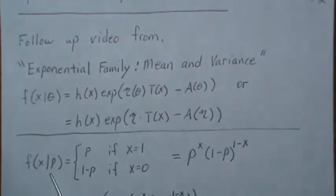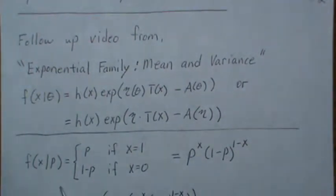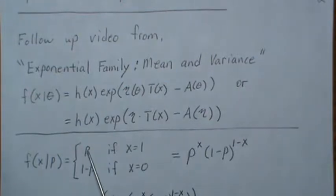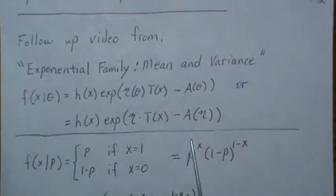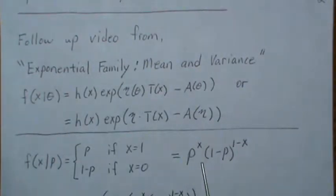So here is the Bernoulli random variable. It takes on two values, 0 and 1. If it's a 1, that happens with probability p, and it takes on a 0 with probability 1 minus p, and it can be more tersely written in this form: p to the x times 1 minus p to the 1 minus x.